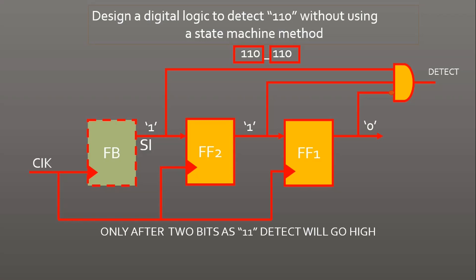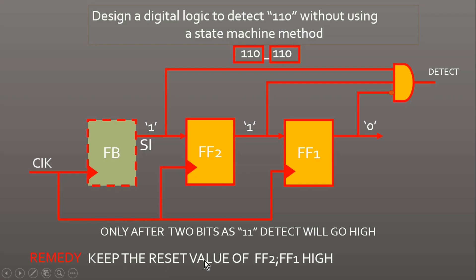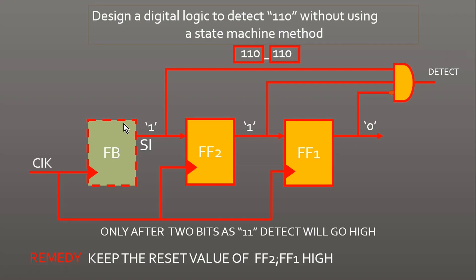The remedy is to set the reset value of flip-flop 2 and flip-flop 1 to high instead of zero. When the first 1 arrives at SI, both FF outputs are also high, so all nodes are 1 and detect gives zero. In the second clock cycle, another 1 shifts through — again all three nodes are 1, so detect remains zero. This overcomes the false-detect problem without altering the actual functionality of detecting 110.